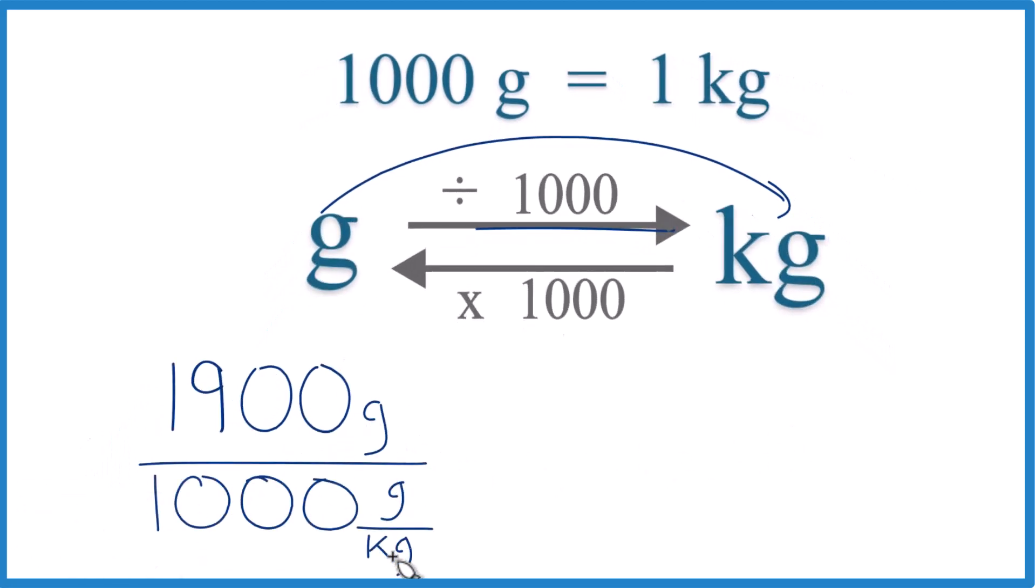And remember, that's 1,000 grams per kilogram, just like up here in our conversion factor. But now we have grams on the top and the bottom. They cancel out. We're going to be left with kilograms, so we know we set it up correctly.